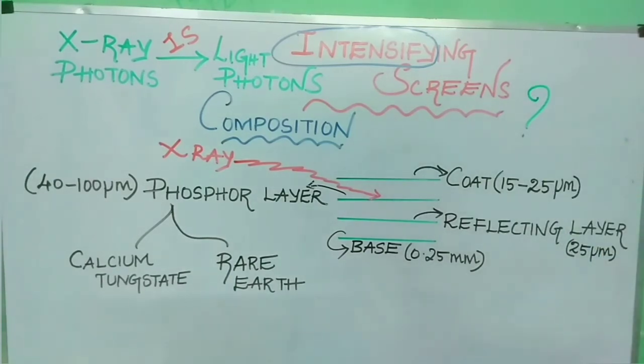Why are intensifying screens placed on either side of the film? Because film is coated with emulsion on both sides. Hence the reaction is happening on both sides of the film. That's why we are using intensifying screens on both sides of the film.